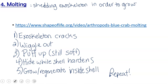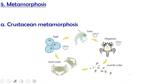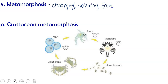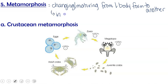An additional challenge for arthropods is metamorphosis — the process of changing or maturing from one body form to another, as we're familiar with in frogs. Because of their hard exoskeleton, metamorphosis in arthropods requires molting. You can't change shape with a hard skeleton on the outside.